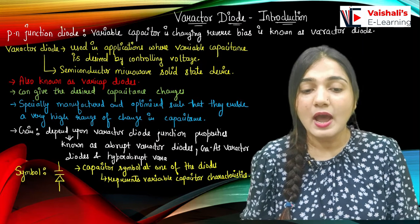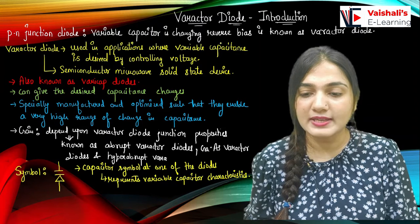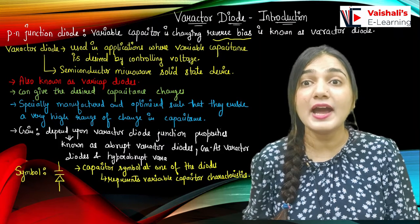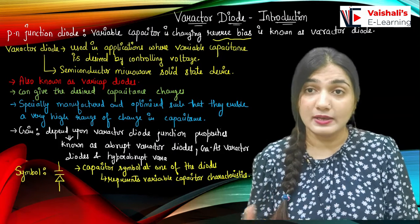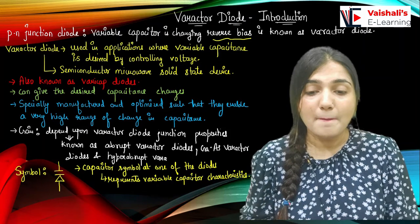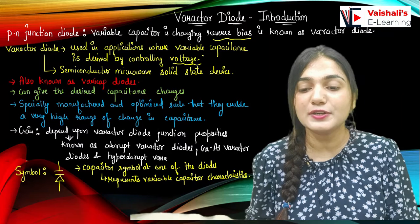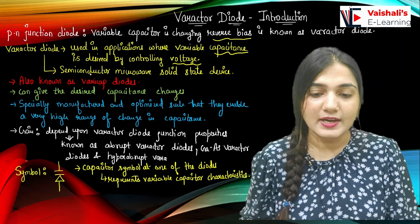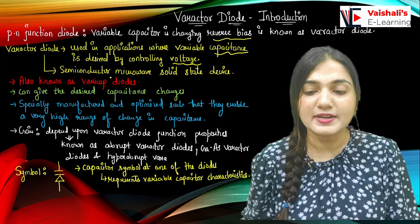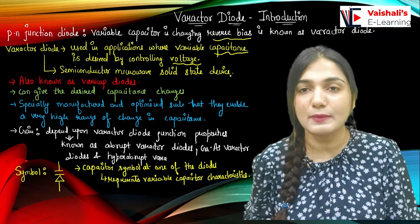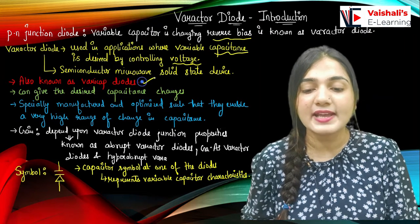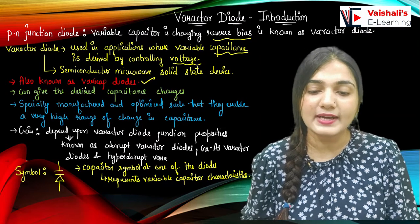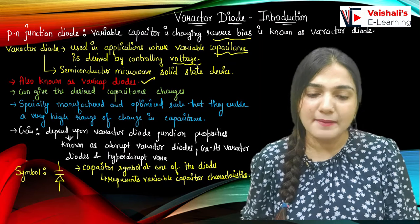Obviously this diode will have a PN junction and it works in the reverse bias condition. It is used in applications where I require the capacitance to be variable — by controlling the voltage. It is also called a semiconductor microwave solid state device. It is also known as a Varicap diode, where 'vari' means variable and 'cap' means capacitor. So Varactor and Varicap are names for the same type of diode.